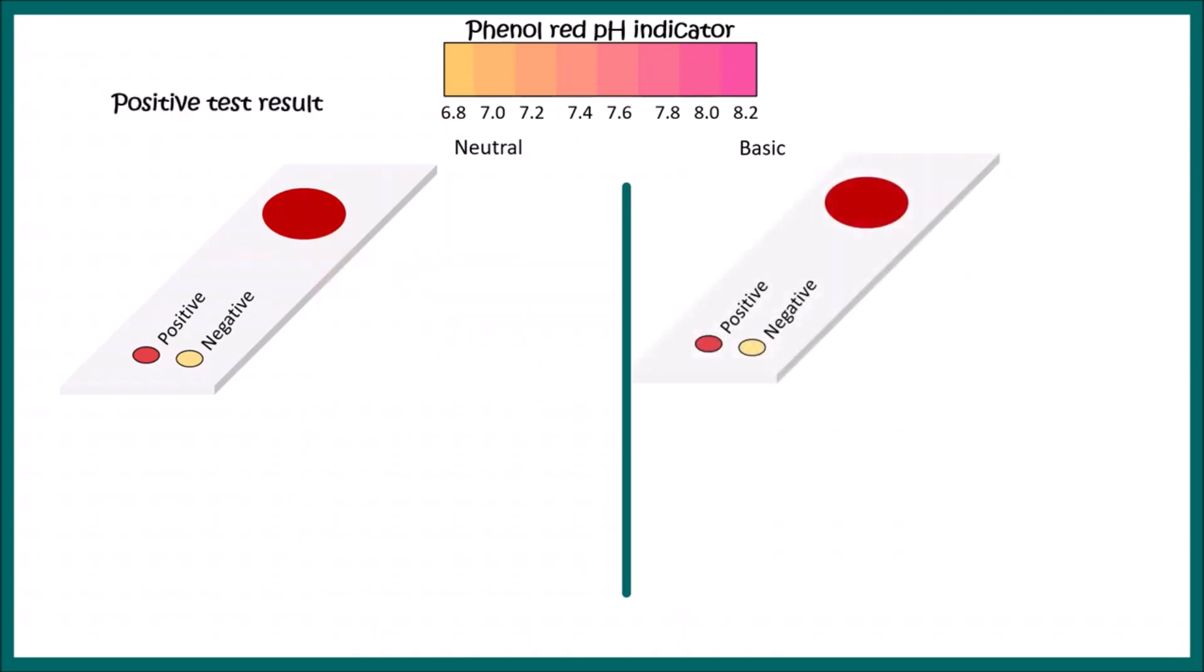In contrast, when Helicobacter pylori is not present, the urease enzyme is absent. Urea is not converted into ammonia, so it remains in a neutral stage. That's why the test is negative and you see a yellow patch, not a red patch.